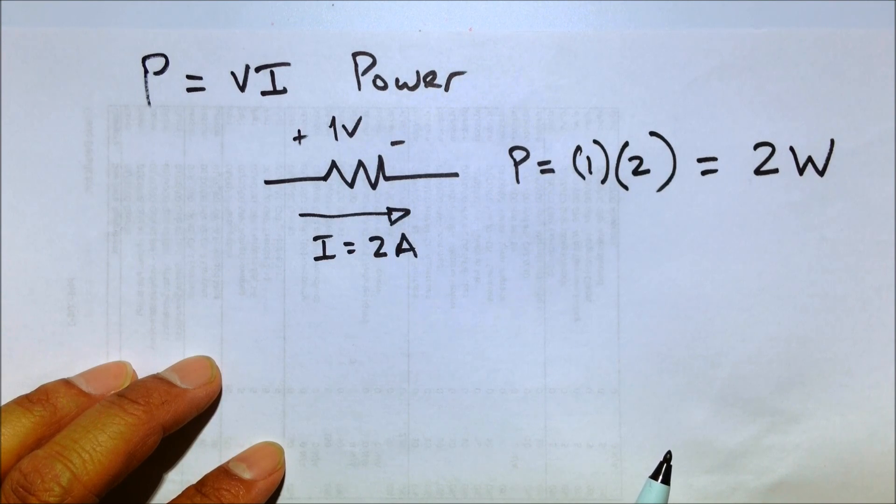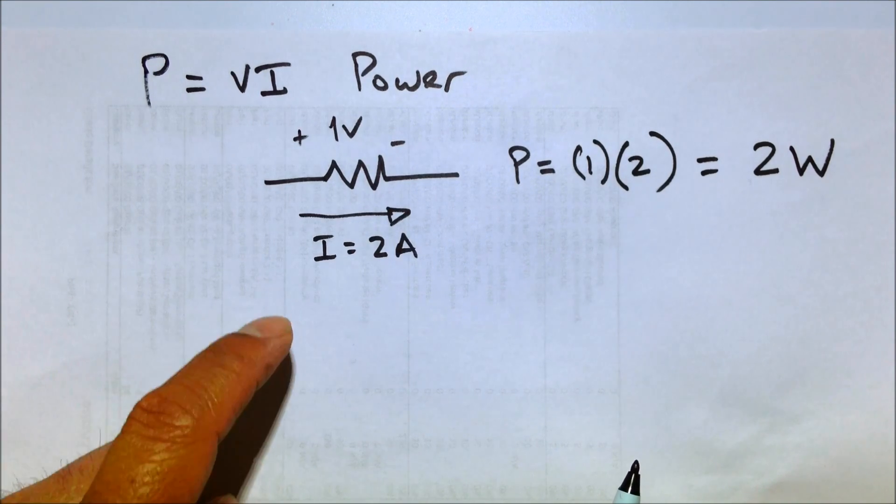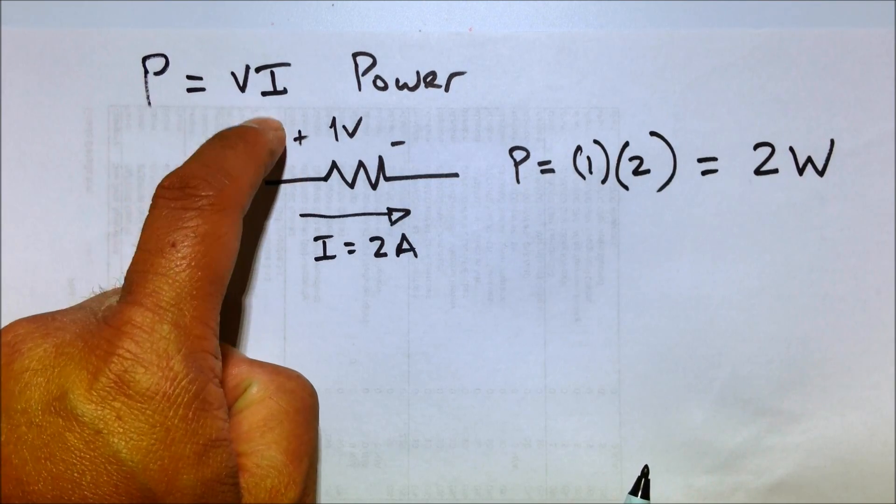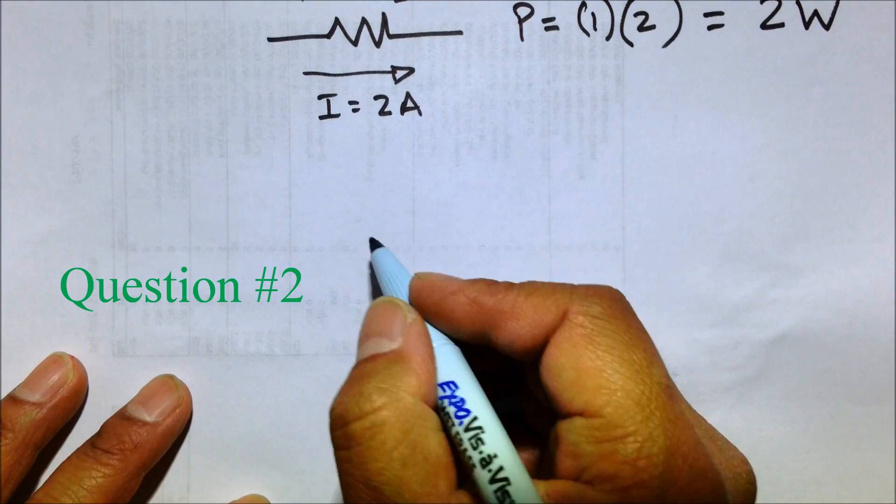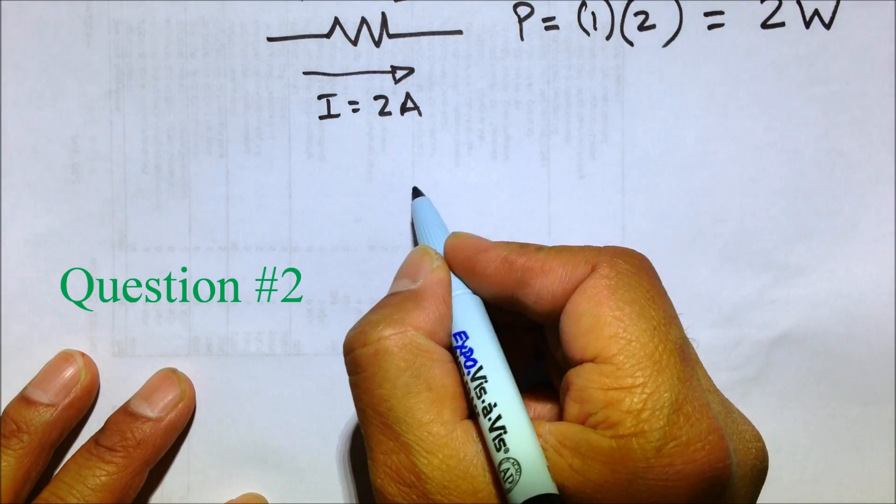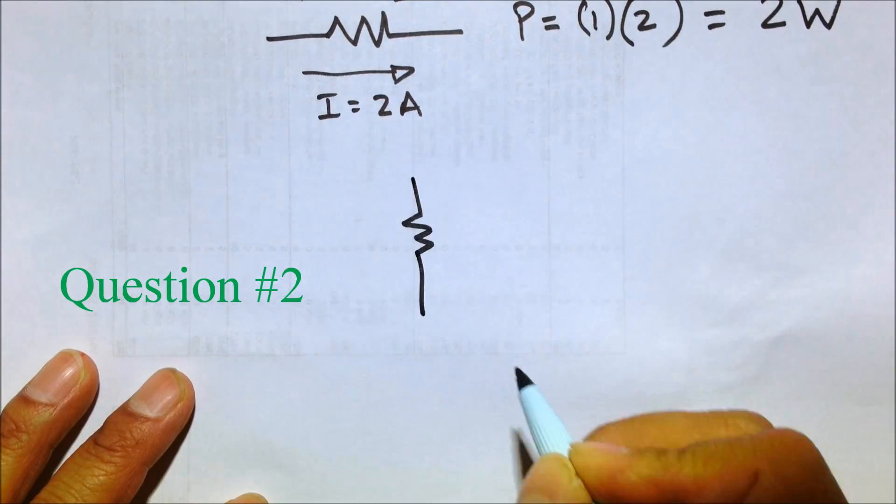Now what if we don't have one of these two variables? What if we don't have V or if we don't have I? So for instance, let's take a look at this circuit.